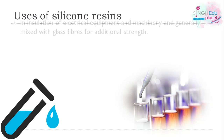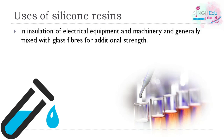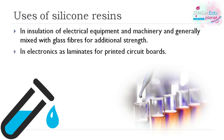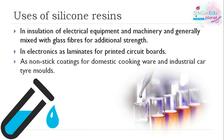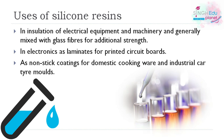Silicon resins are used for insulation of electrical equipment and machinery, generally mixed with glass fibers for additional strength. They are used in electronics as laminates for printed circuit boards, and as non-stick coatings for cookware and industrial molds.